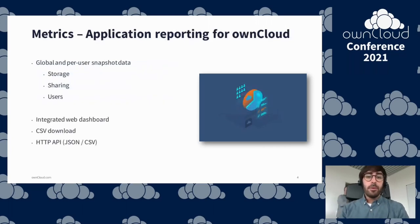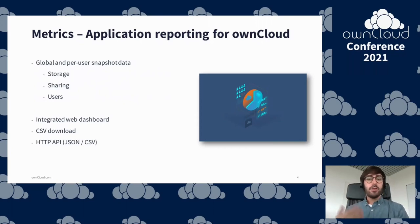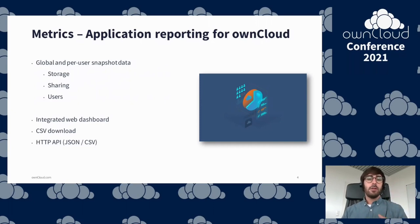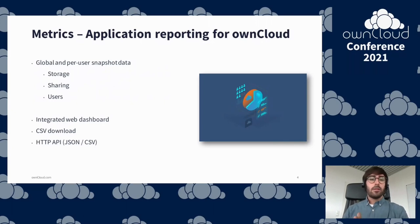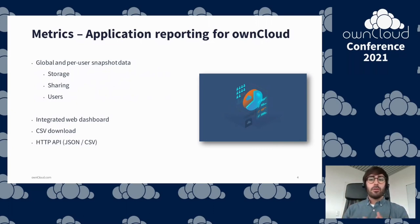The metrics app is a new enterprise feature released this year. The idea behind it is to help administrators with application reporting for stakeholders. The app provides data about storage usage, sharing usage, and users — on a global basis meaning for the whole OnCloud instance, and also very granularly for every user.